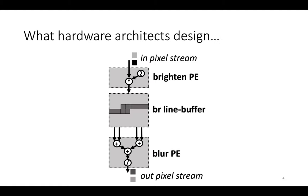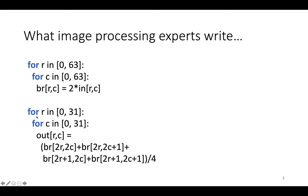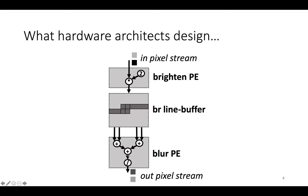What hardware architects would design for an application like this is a dataflow architecture like the one shown in the center, where each loop nest in the original application gets its own dedicated processing element. Streams of pixels flow across the processing elements through high-bandwidth, small-size reuse buffers called line buffers, and are finally output. For example, we'd input the stream of pixels, multiply each pixel by 2, pass these pixels into a line buffer which stores just enough pixels to output 2 by 2 squares, send those squares to a PE that averages them together, and then output an output stream for maximal parallelism and minimum on-chip working set.